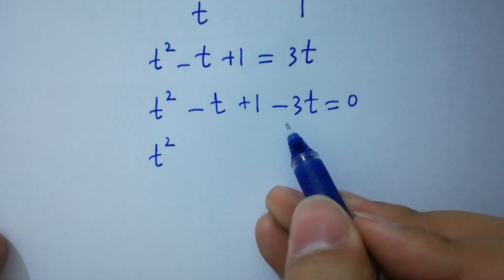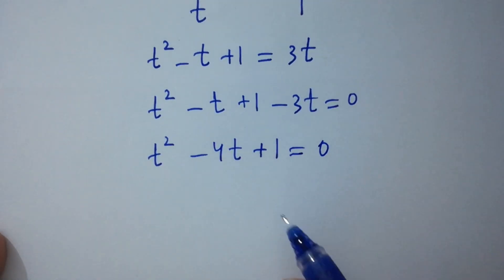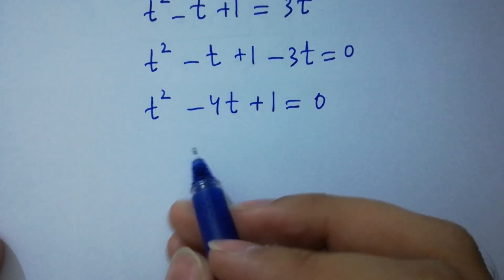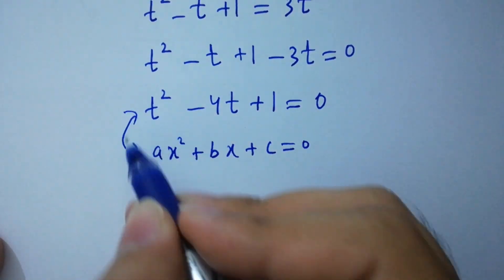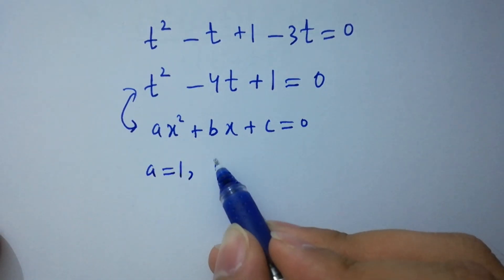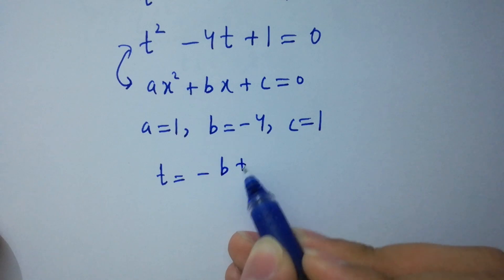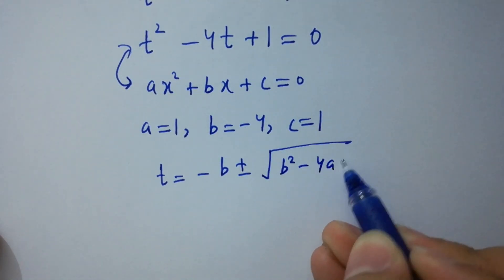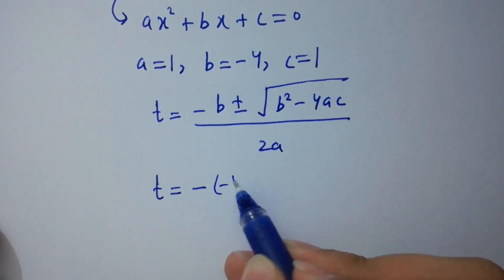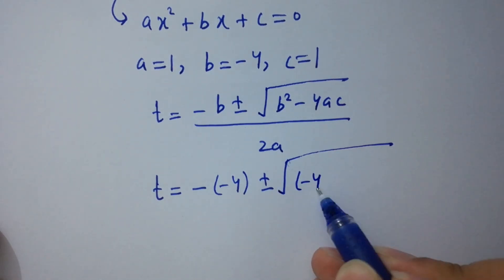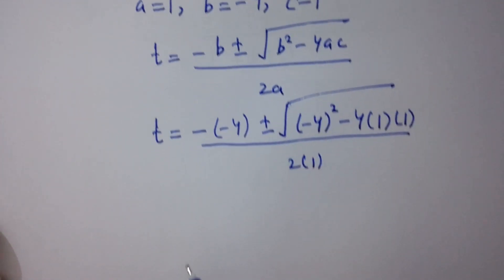Rearranging: t squared minus 4t plus 1 equals 0. This is a quadratic equation of the form at squared plus bt plus c equals 0. Comparing, we have a equals 1, b equals minus 4, and c equals 1. Applying the quadratic formula: t equals minus b plus or minus square root of b squared minus 4ac, over 2a.